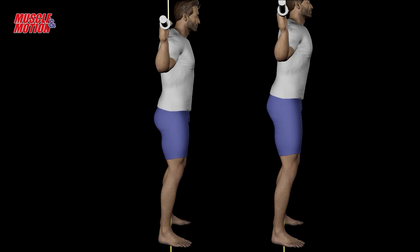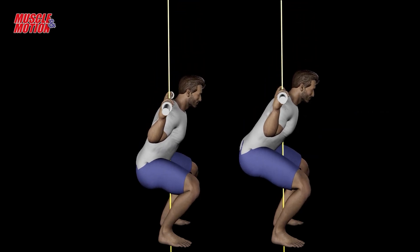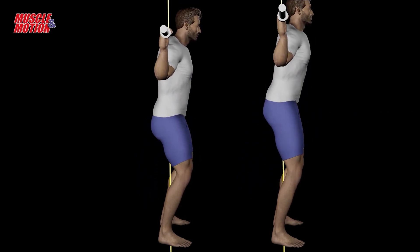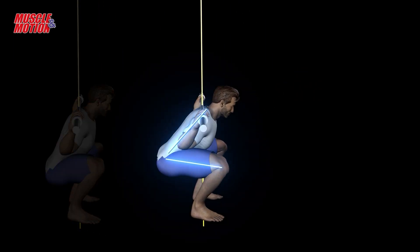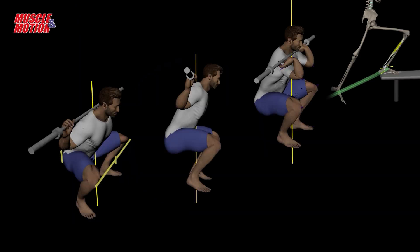In conclusion, the body's structure affects the ability to perform squats. Exercisers with a long thigh and a short torso will experience greater difficulty in staying upright. Listen to your body and use a variation that suits it — whether it is widening your stance, raising the heels, improving mobility, or performing variations such as a front squat or goblet squat.